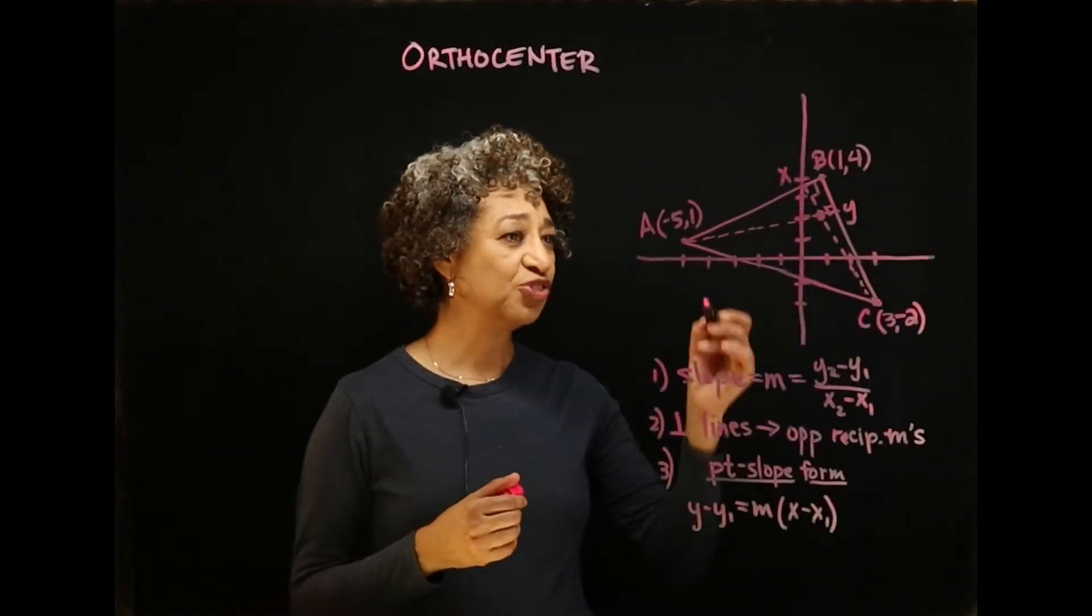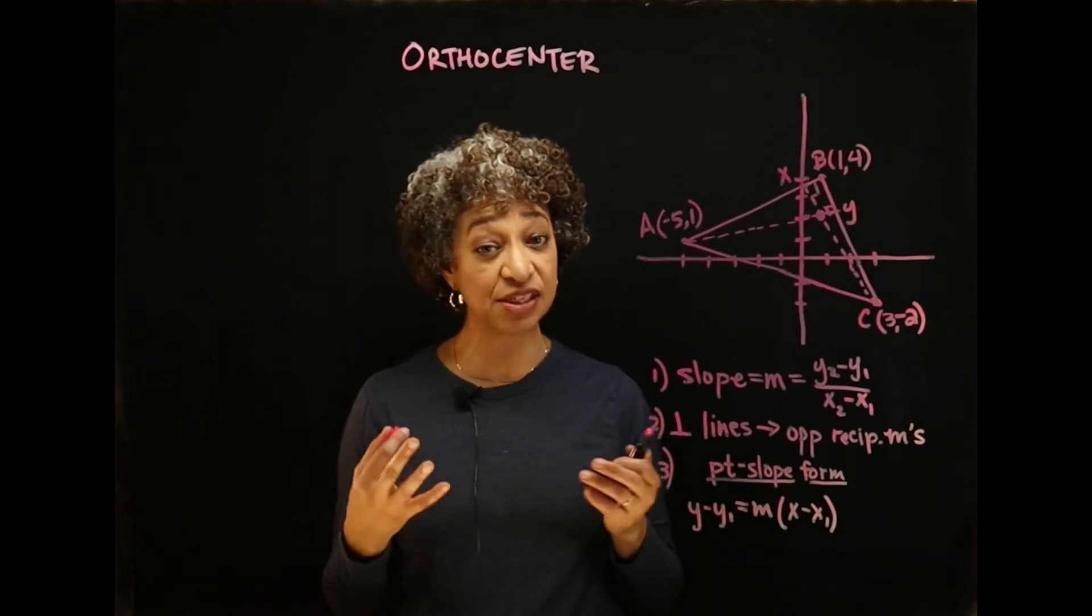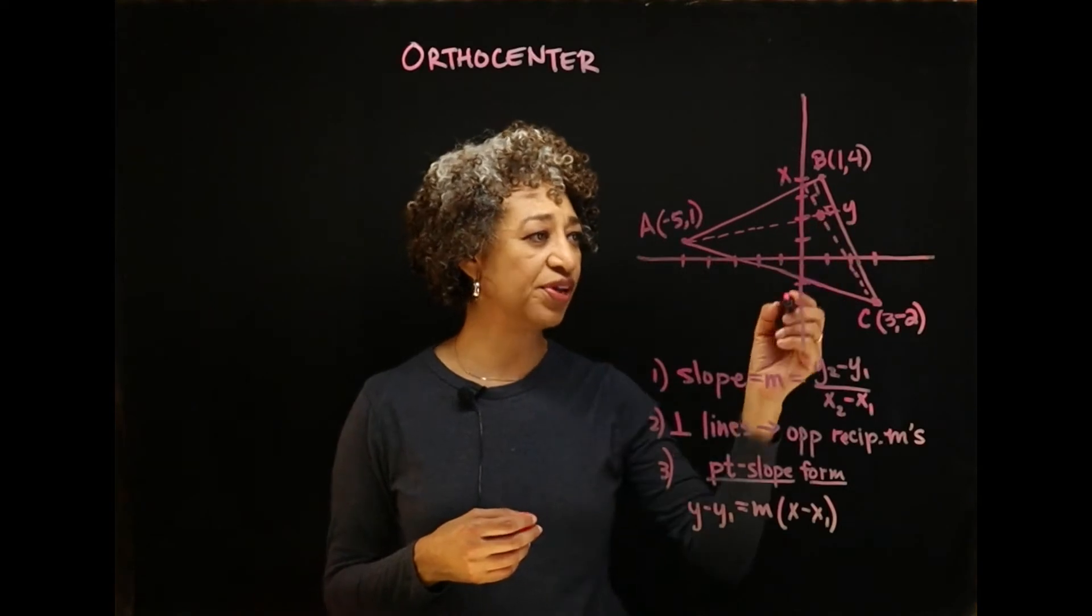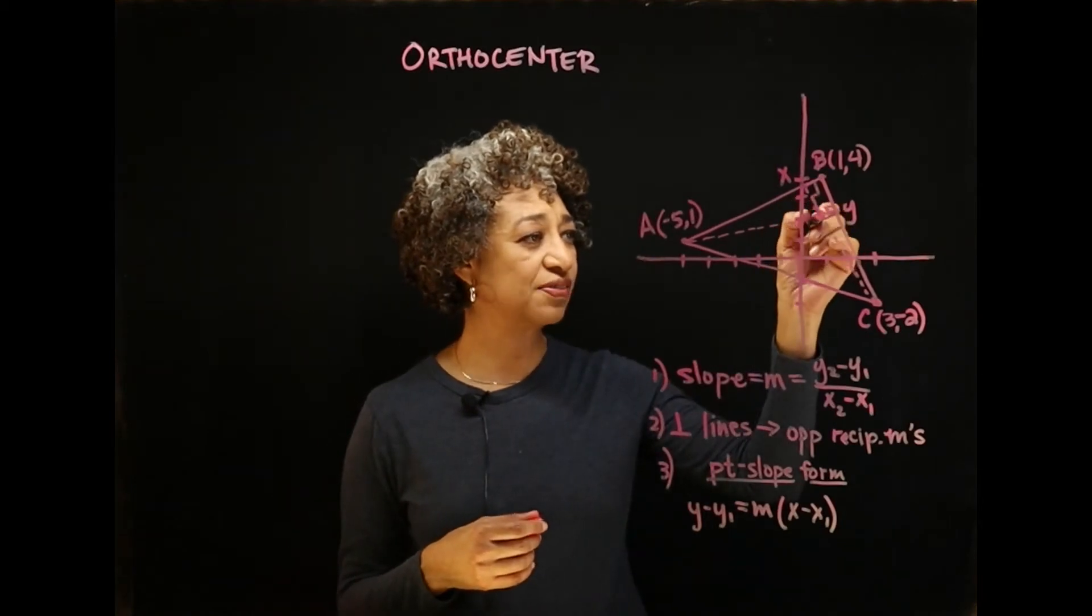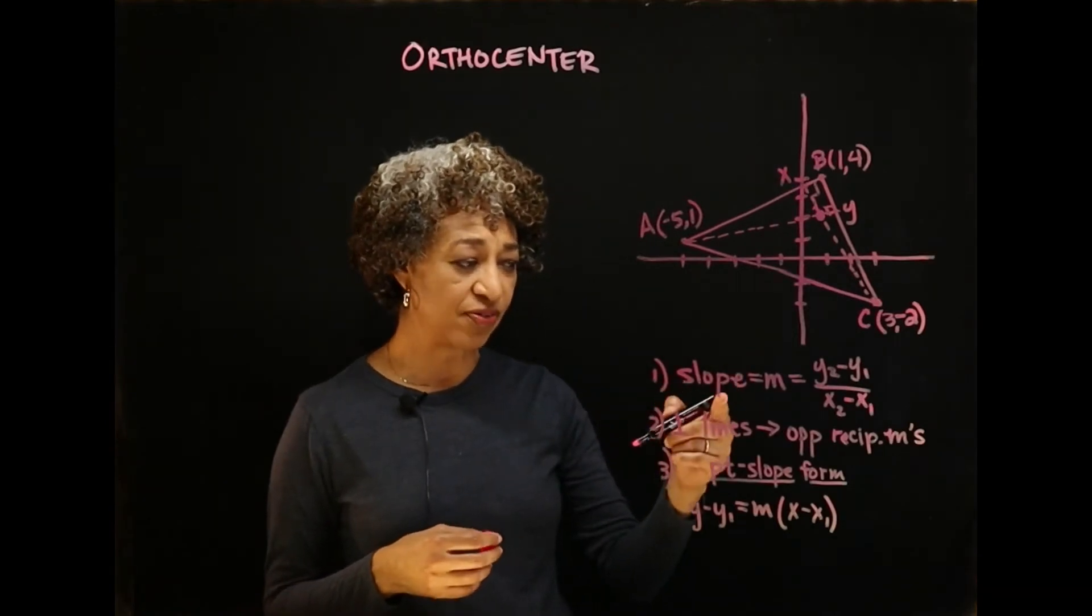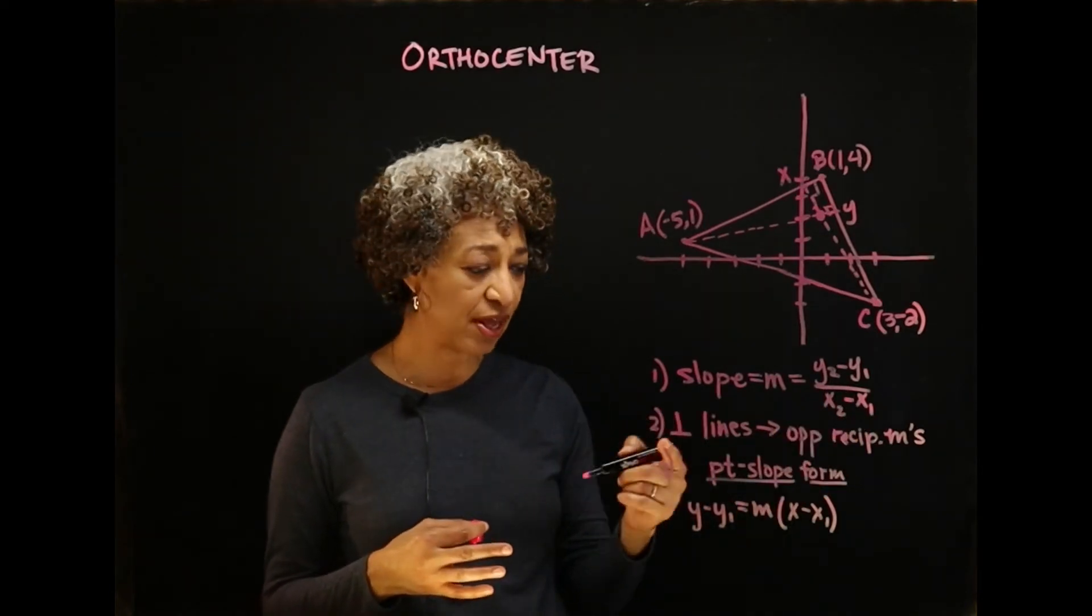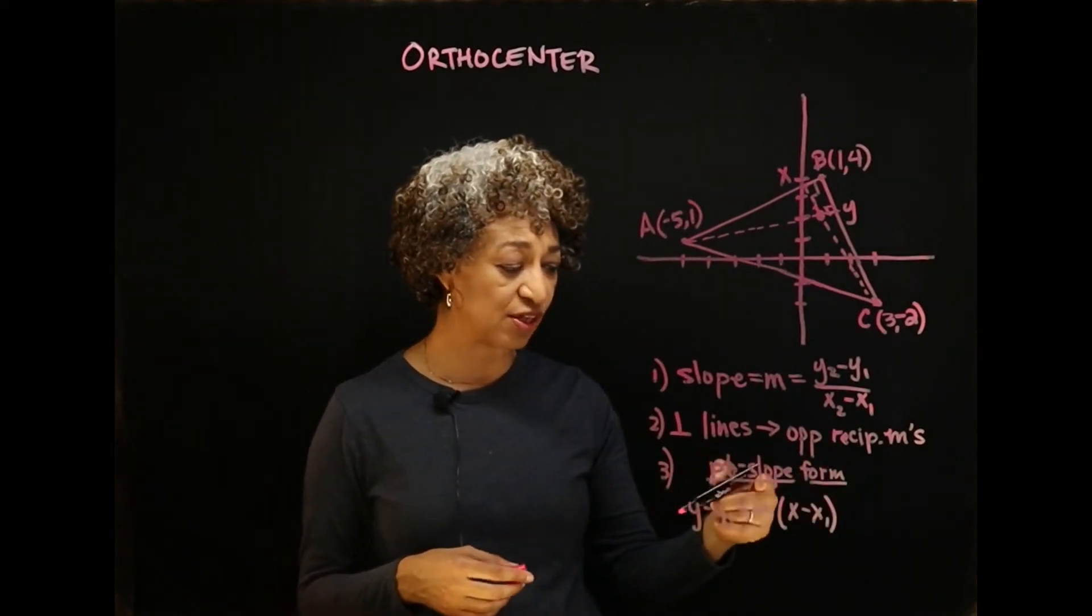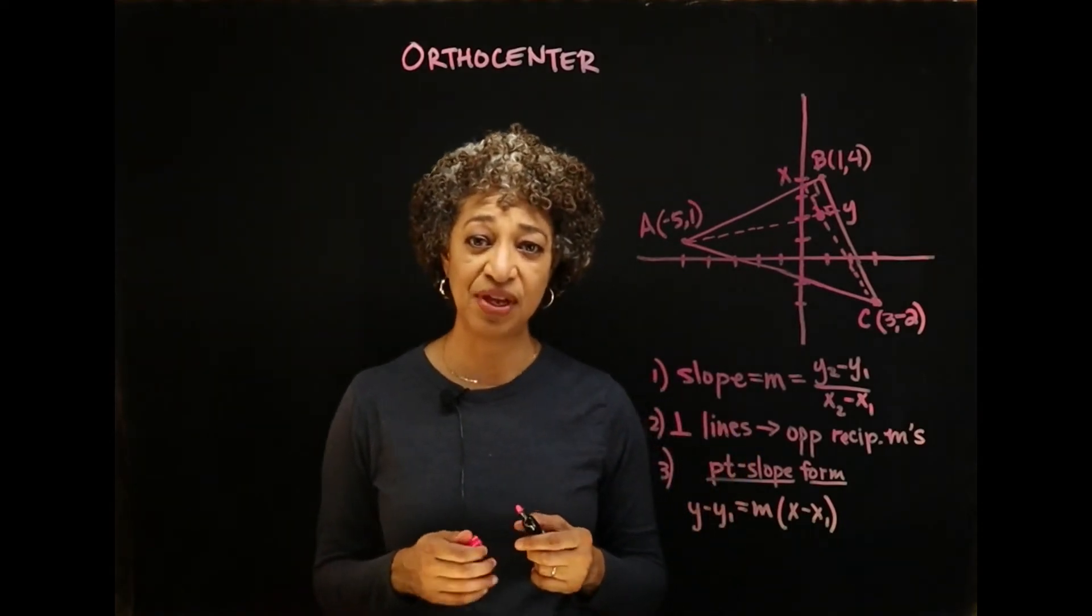So here is our triangle, triangle ABC. And I want to find the orthocenter of this acute triangle. Since it's acute, we expect it to lie inside of the triangle. I've tried to sketch in two of the altitudes for you. There's a third altitude. We don't really need to find a third altitude because two lines are sufficient to find this point of intersection. Before we begin, let's remember that the slope of a line is y2 minus y1 over x2 minus x1. We need to also remember that perpendicular lines have slopes that are opposite reciprocals. And I'm going to use the point-slope form of a line to get the equations of my altitudes. So let's get started.